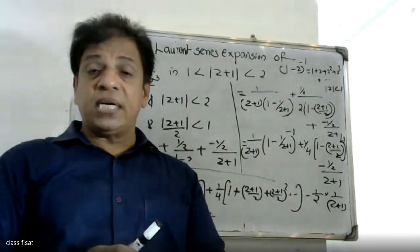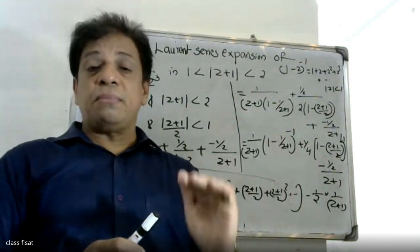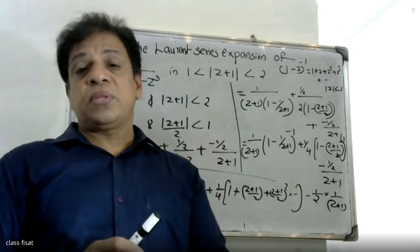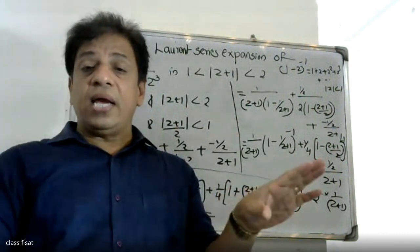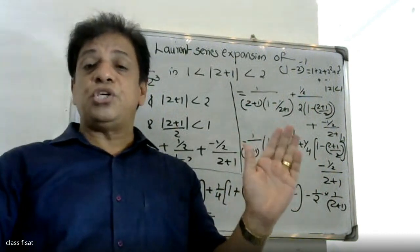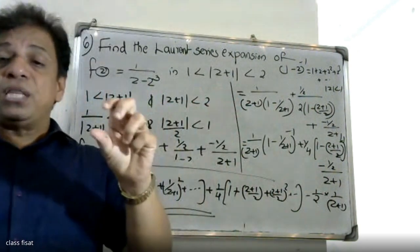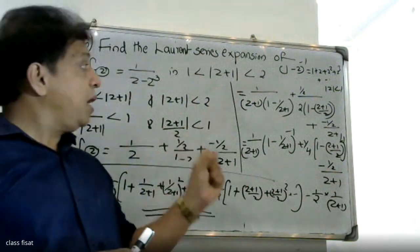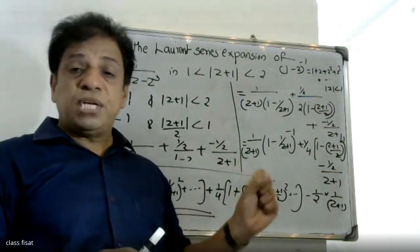A by z, B by 1 minus z, C by 1 plus z. So A, B, C. A, B, C — C is a constant. Because A, B, C will be constants.